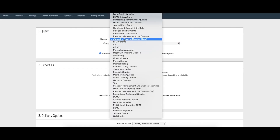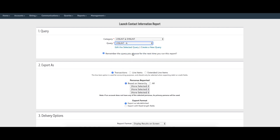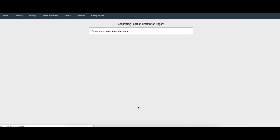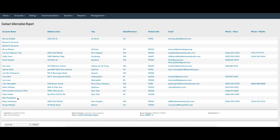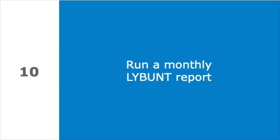Most organizations pull this query with a report that exports the name, address, email, and phone number for every constituent account in the query. Running this report monthly and keeping it visible can be a great motivator. Make sure that every person on that list has renewed their support or is personally contacted. If a donor chooses not to give, ask them why — it is important to learn something about your donors in the process of retaining and renewing them.